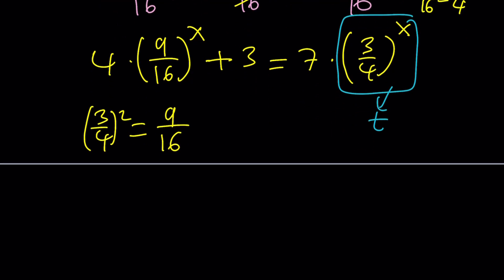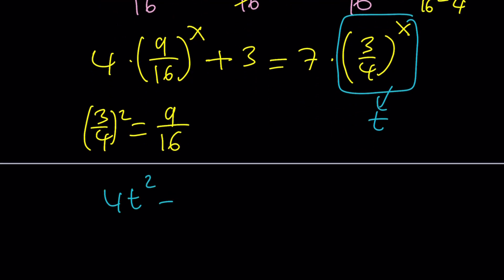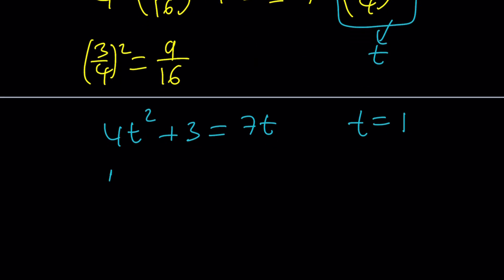And then we get 4t squared plus 3 equals 7t. You probably noticed right away that t equals 1 works, but there's another solution, since this is quadratic, and it has real solutions. So we're going to go ahead and make it a full quadratic and just use Vieta's formulas. What does Vieta's formulas tell us? The product of the roots is c over a,